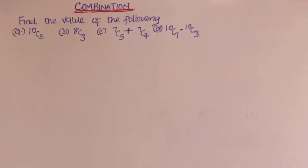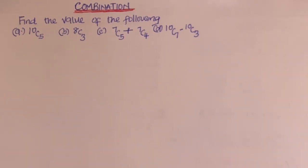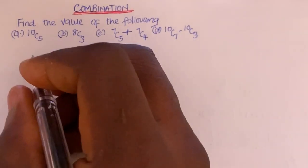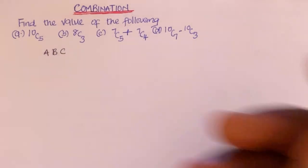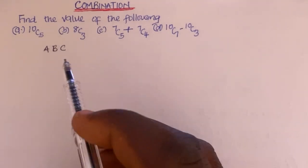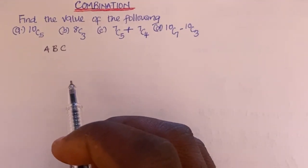In today's video we are talking about combination. First, I need to define or find a brief definition for combination. Combination is actually very simple, and it is also known as selection. Suppose we have three letters: A, B, and C. If you are asked to find the number of ways to rearrange these three letters, that is actually permutation.